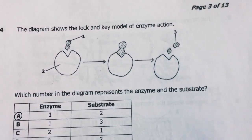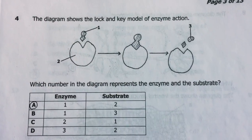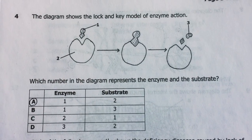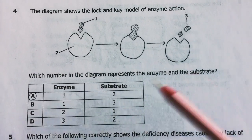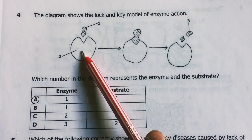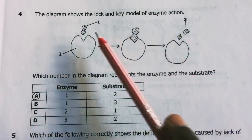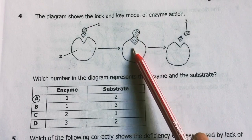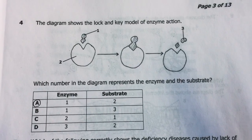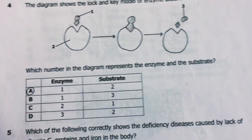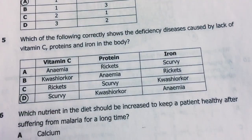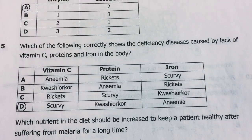Question 4: The diagram shows a lock-and-key model of enzyme action. Which numbers represent the enzyme and the substrate? My answer is one and two. This is the enzyme because it doesn't change at the end of the reaction, and that's the substrate — it breaks down. This is a catabolic reaction, so it's a digestive enzyme, not a synthetic one. The answer is A.